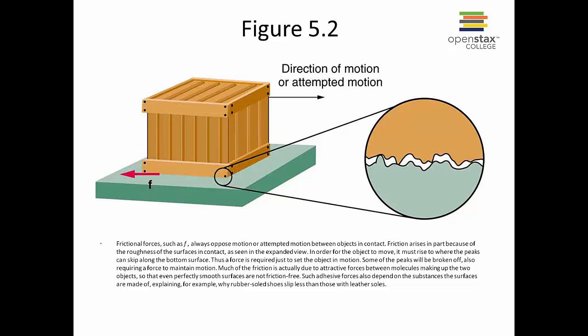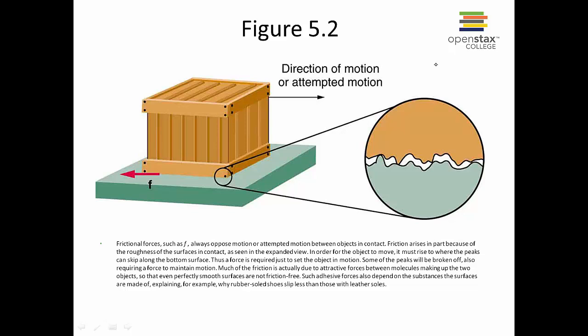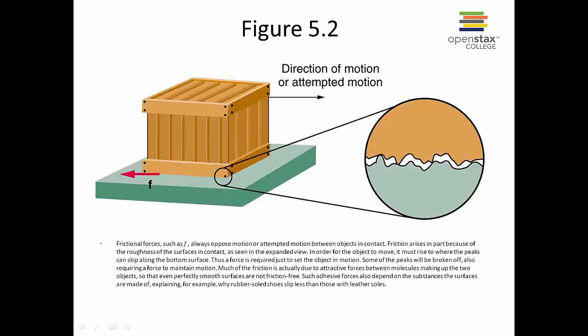Commonly, we use the symbol mu. And there are two different types of mu. There's the mu S for the static and mu K for kinetic. And it turns out that things are less resistant to motion when they're moving than when they're stationary. So mu K is always less than mu S.